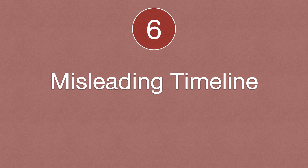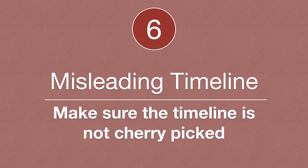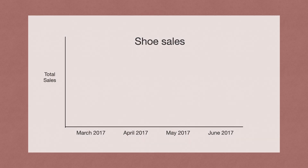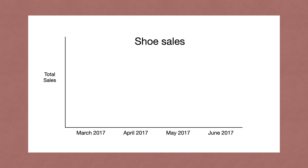Finally, the last thing we'll look at is a misleading timeline. When looking at timelines, make sure it isn't cherry-picked — that whoever's presenting the data didn't zoom in on a very specific window of time to hide the full picture. For example, here we're graphing shoe sales of a company from March 2017 to June 2017, and it looks like sales are going up. The shoe company appears to be doing pretty well from this view.